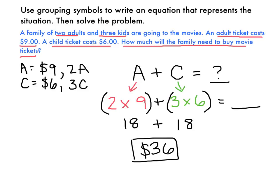I am going to put parentheses around the 2 times 9 and around the 3 times 6, even though order of operations says that I would be doing multiplication first, no matter what. I think that it just makes it clearer which ones are the adults and which ones are the kids. You could also write it as 2 times 9 plus 3 times 6 equals 36, and your equation would still be correct because you'd still be doing multiplication first, according to order of operations.